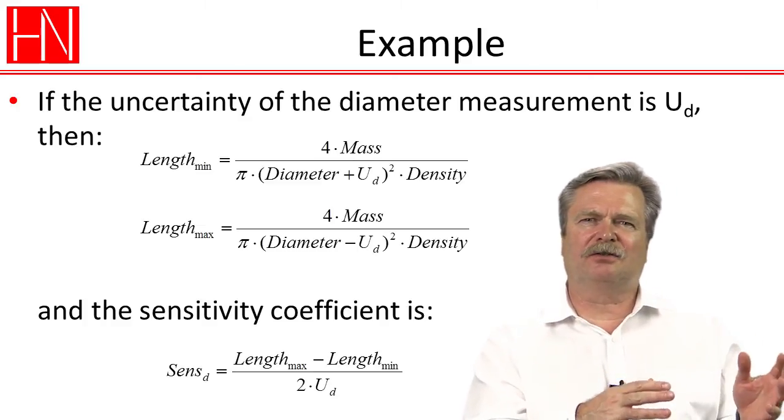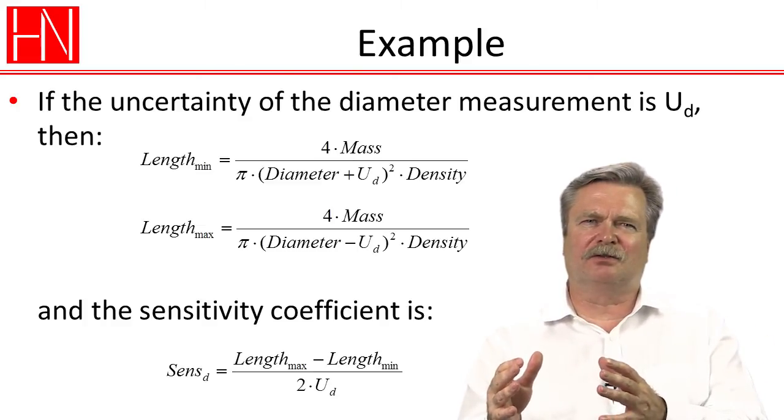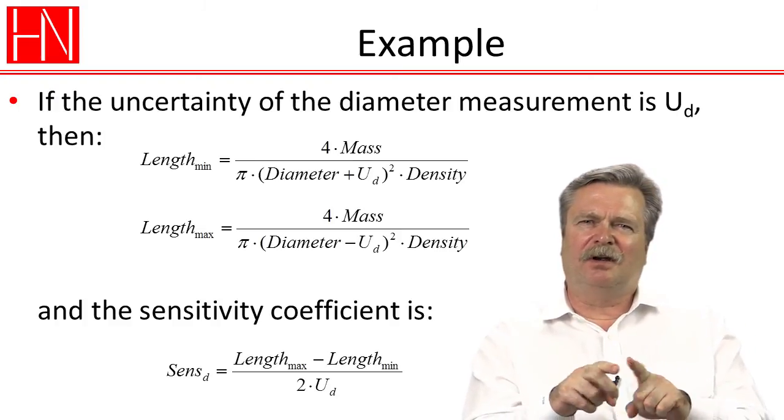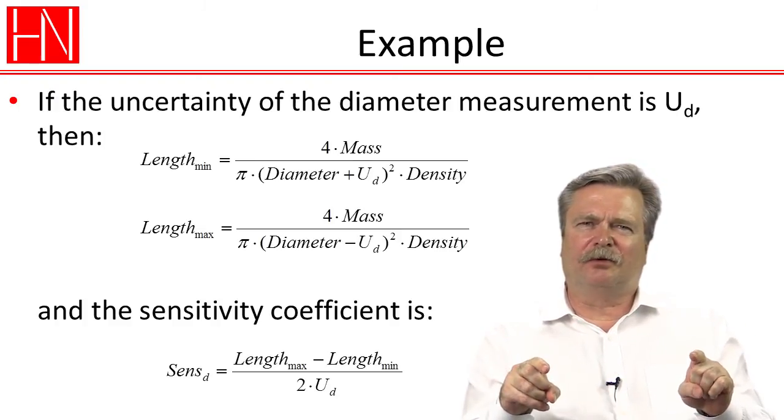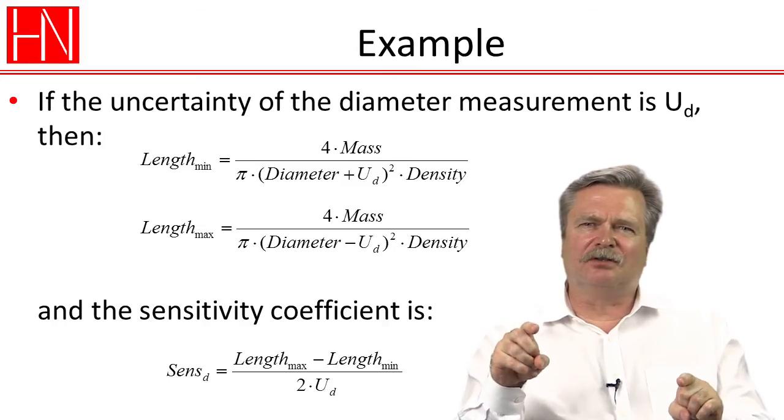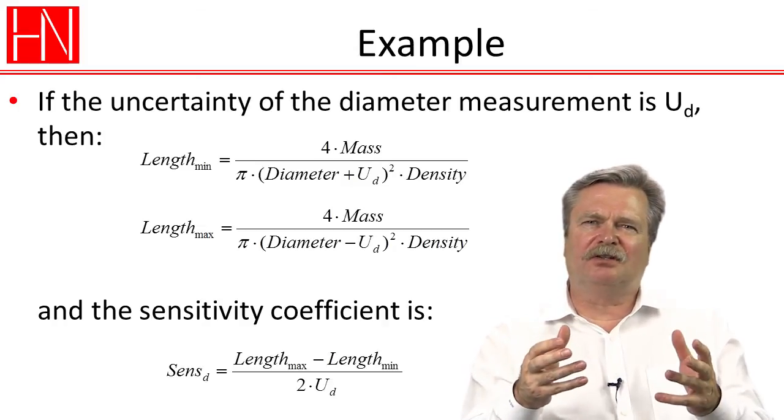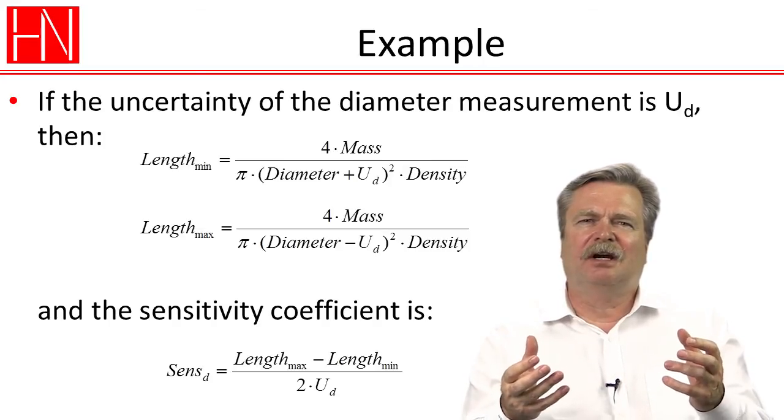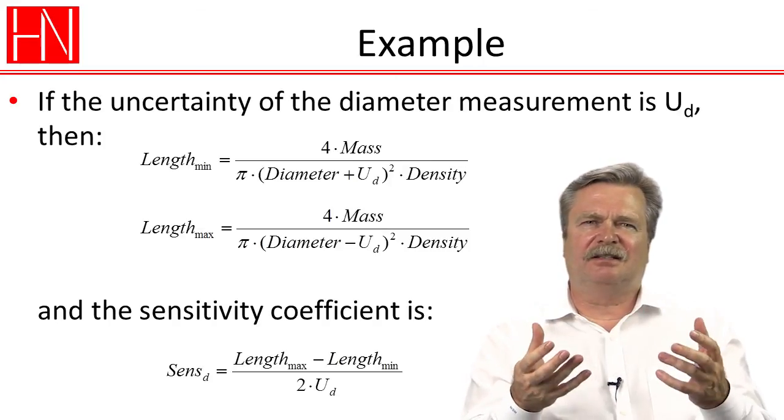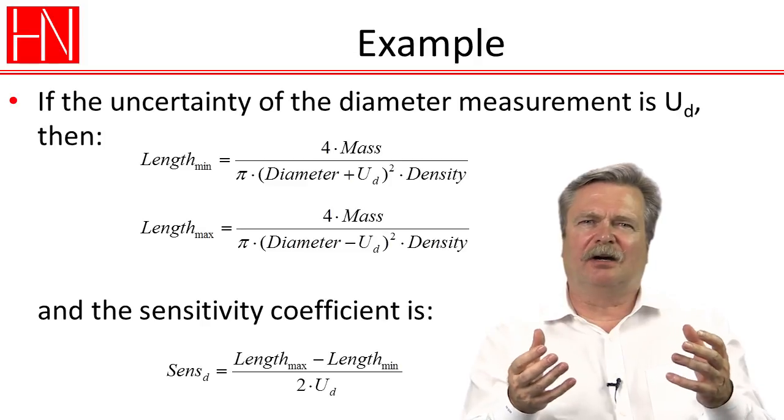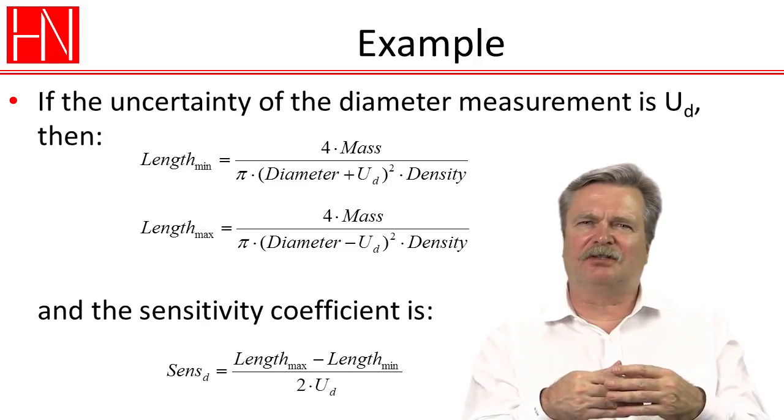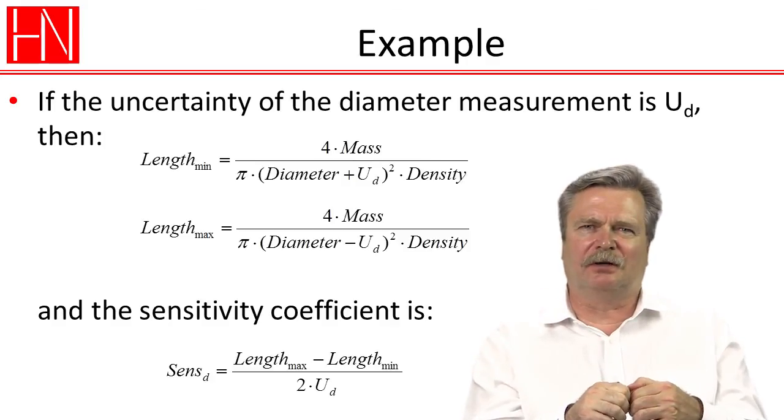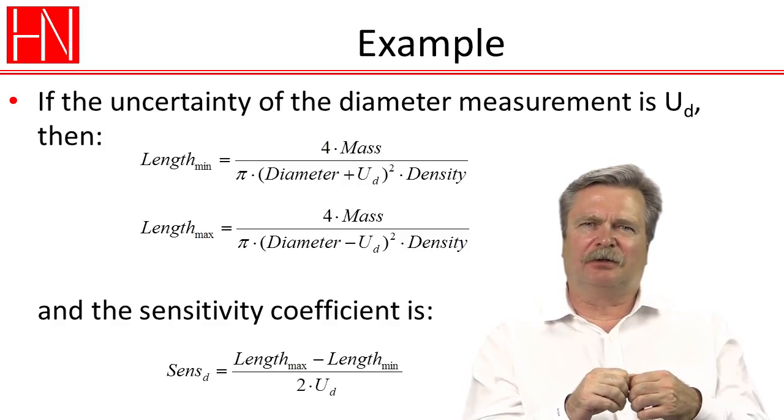Because in one case, we add an uncertainty, and in another we subtract an uncertainty. So basically what we find out is that when we vary the measured value for the diameter by two times the uncertainty, how much does the calculated length change? And so that is how we find out the sensitivity coefficient, basically the slope of the relationship between the diameter and the length.